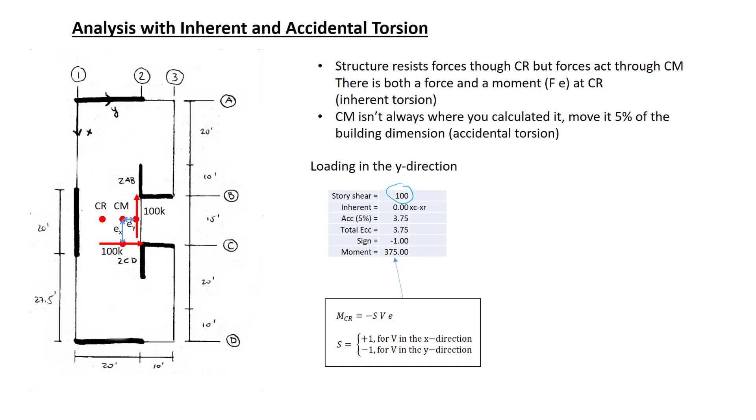There's no inherent eccentricity, because in the x-direction, the center of mass and the center of rigidity are aligned. There's still accidental eccentricity, 5% of the building dimension. I've shown this positive. I could have shown it negative. It'll change some signs around, but it won't change our design loads. So the total eccentricity is the sum of the inherent and accidental.